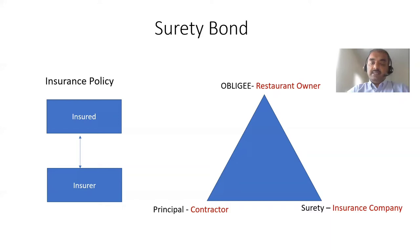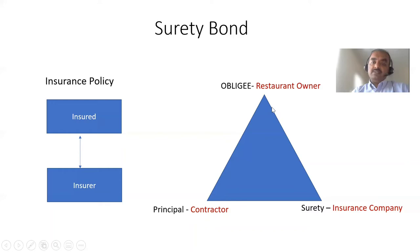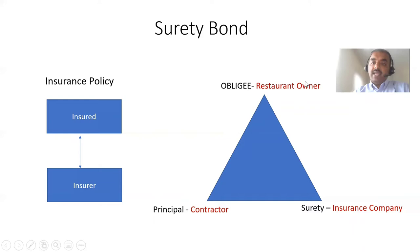Every time when the contract is signed between the restaurant owner and the building contractor, the restaurant owner makes sure that the building contractor gets some kind of surety bond. By the name itself, you can see it's a kind of surety that tells the building contractor is going to complete his work as per the contract established between the restaurant owner and contractor.